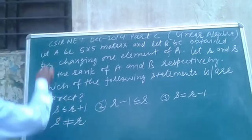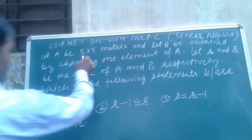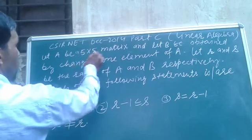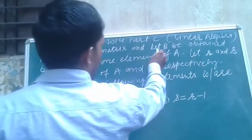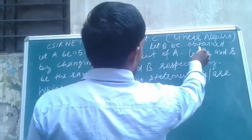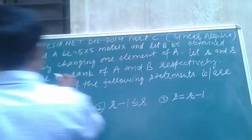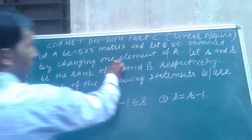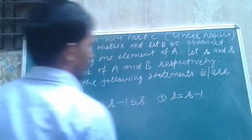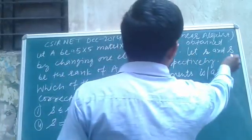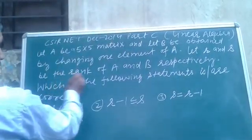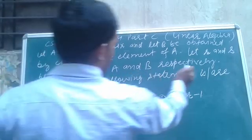Question is, let A be a 5×5 matrix and B be a matrix obtained by changing one element of A. Let R and S be the rank of A and B respectively.